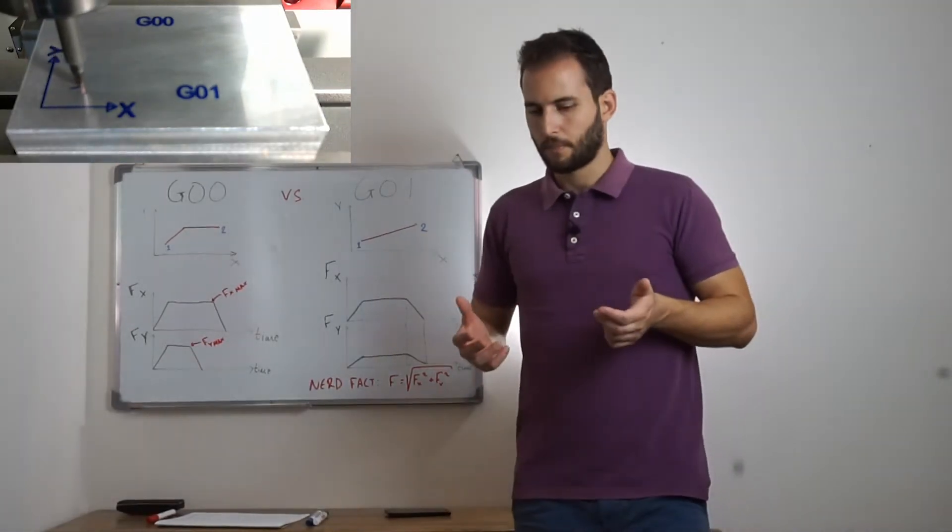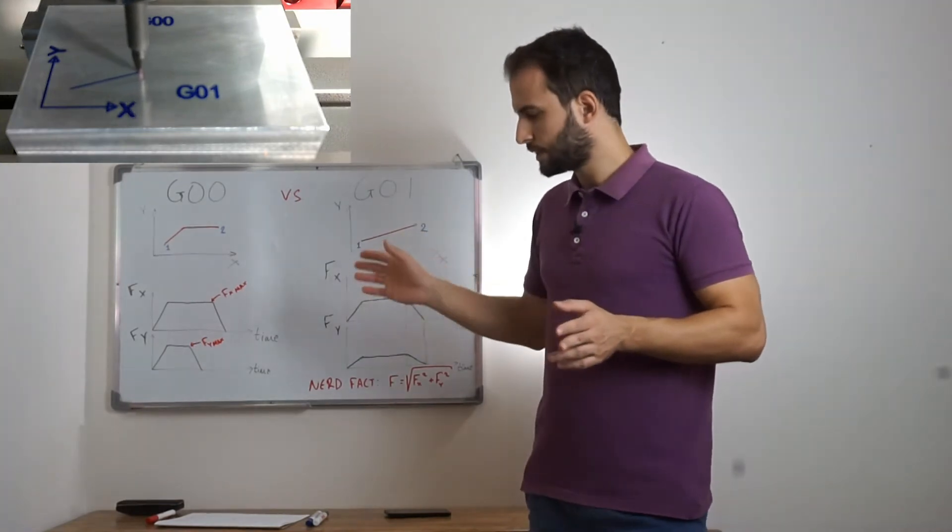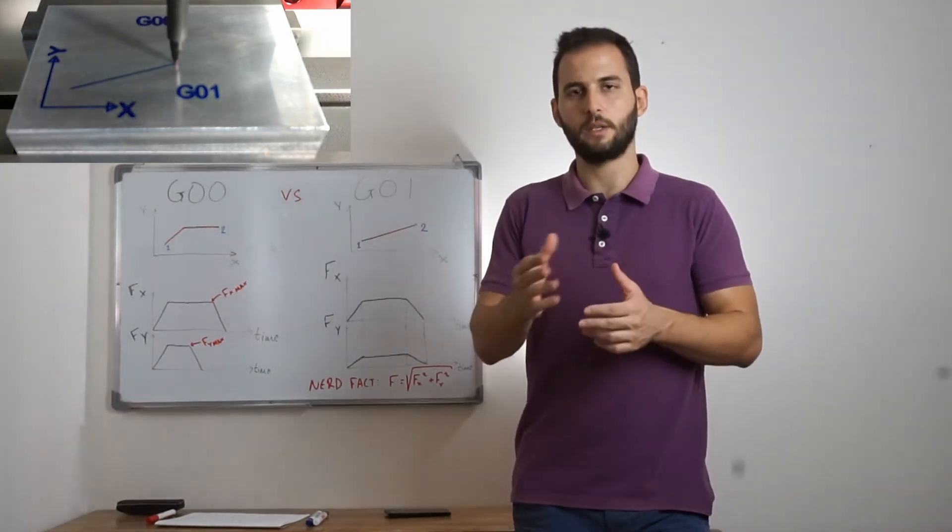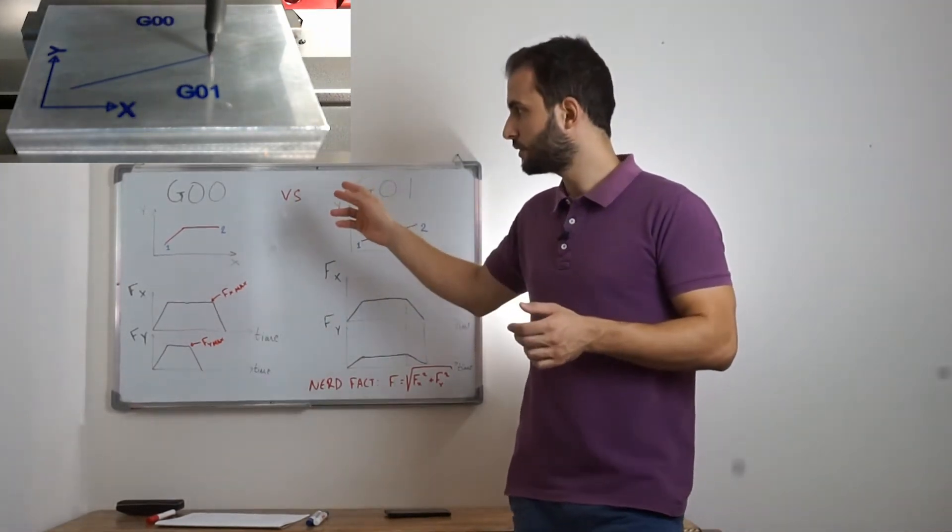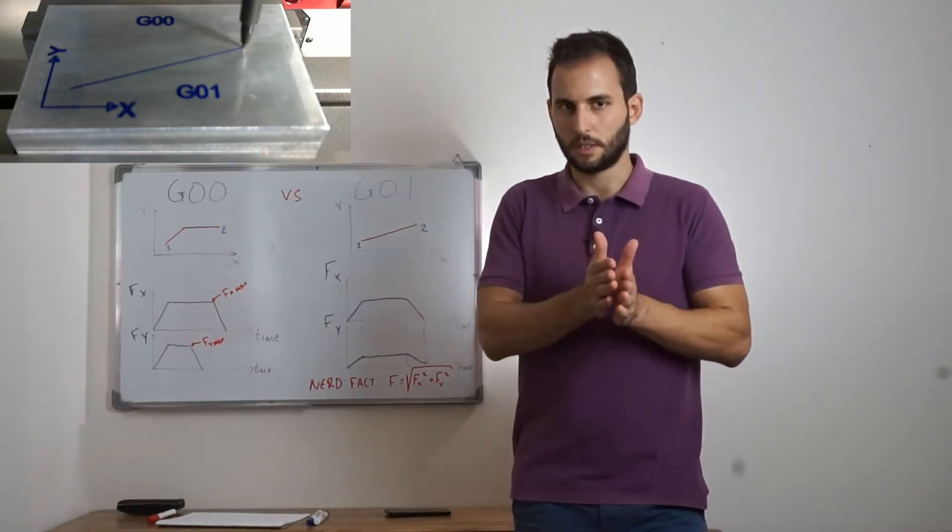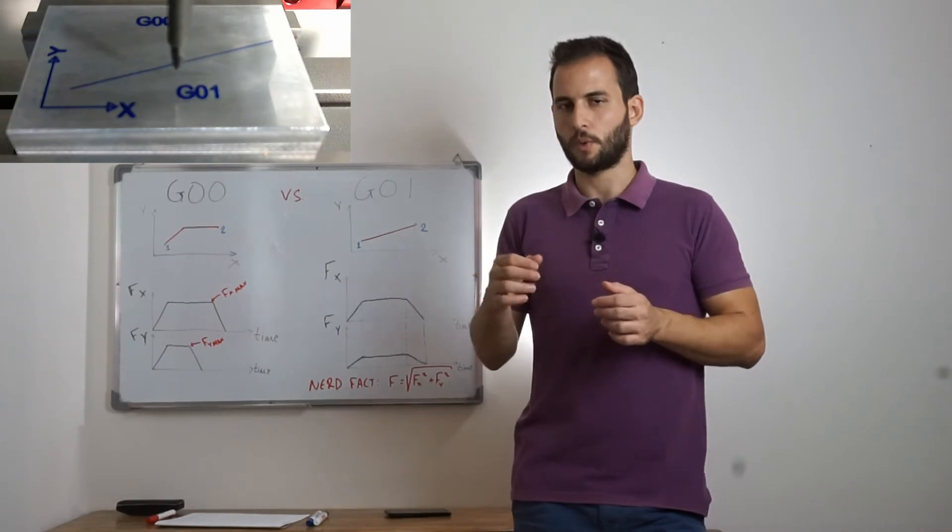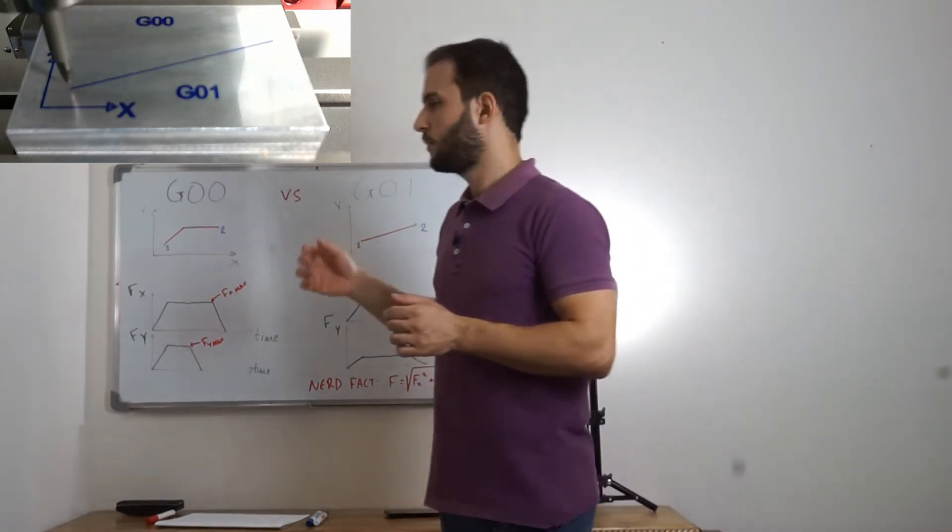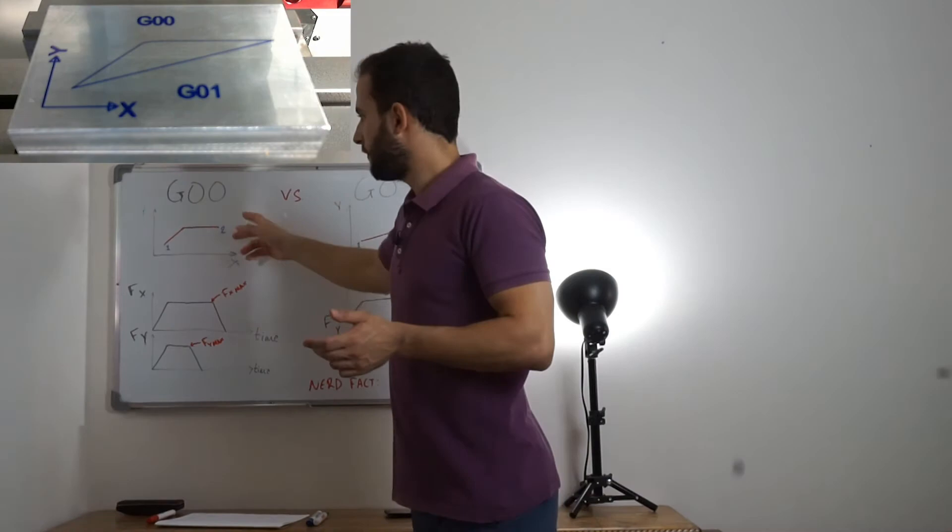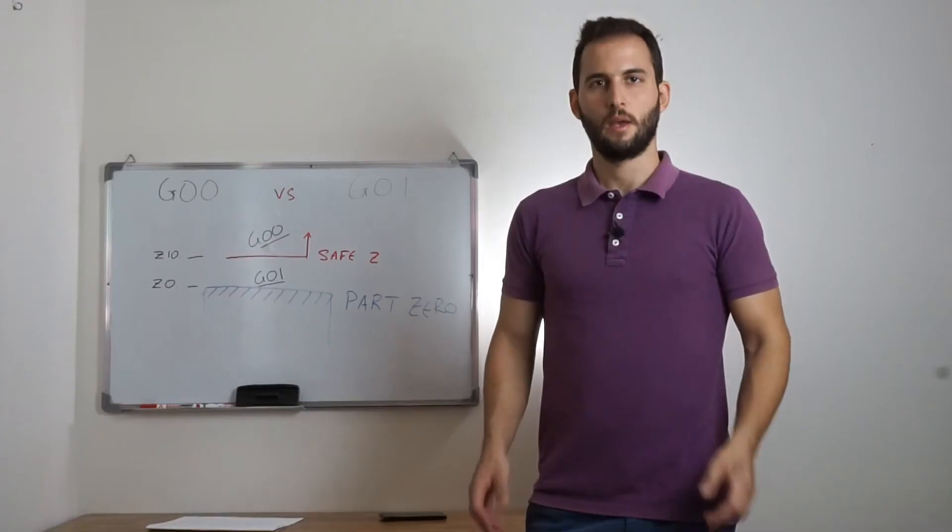Okay, so this shows us that we cannot rely on G0 when we want to do a precise movement, because we cannot control, we cannot imagine, if you want, the final movement.